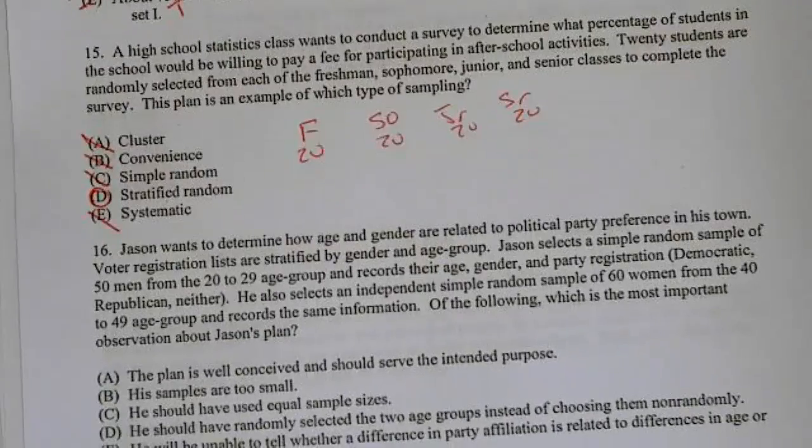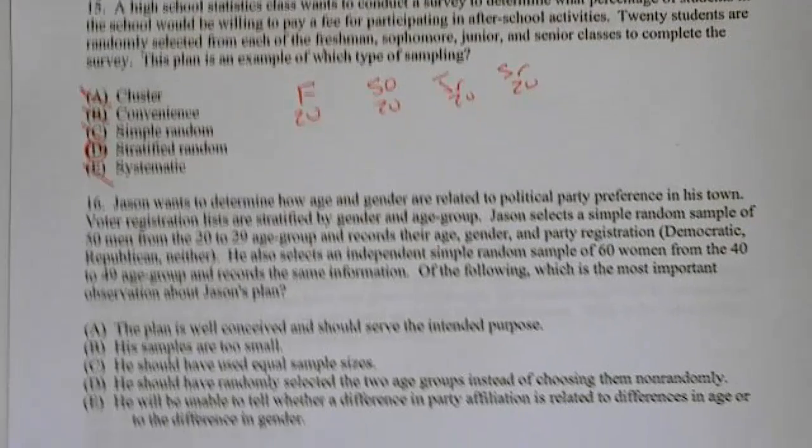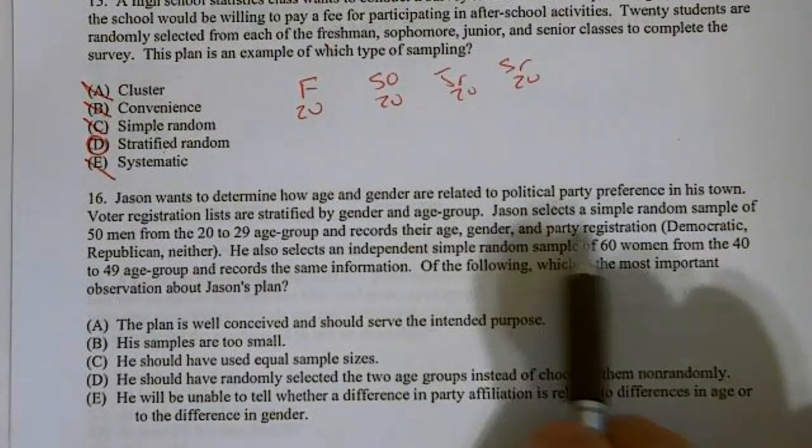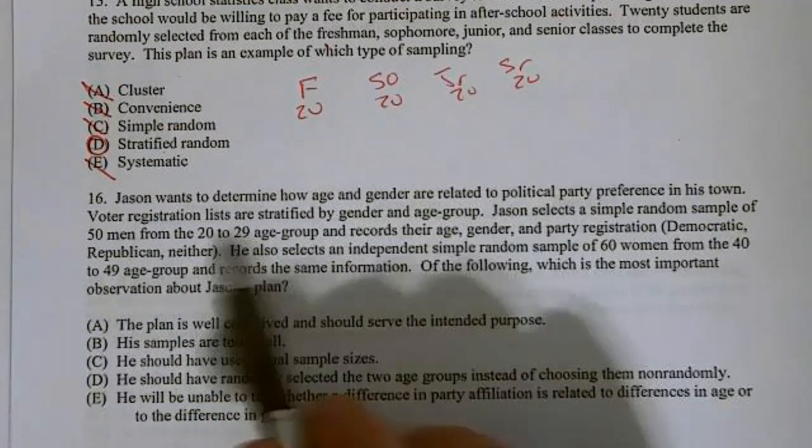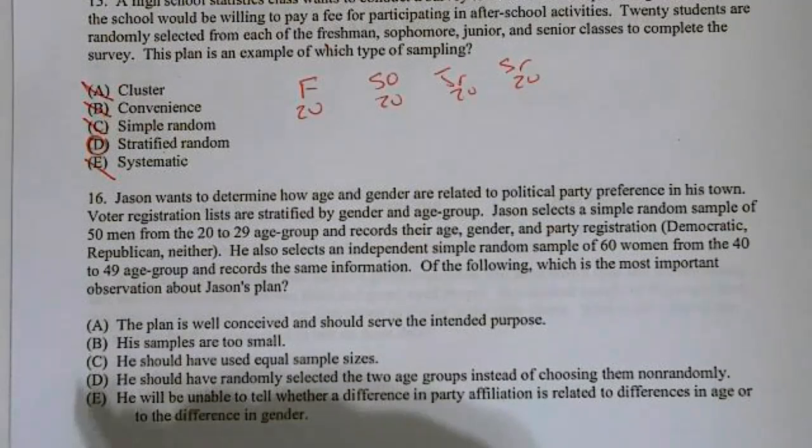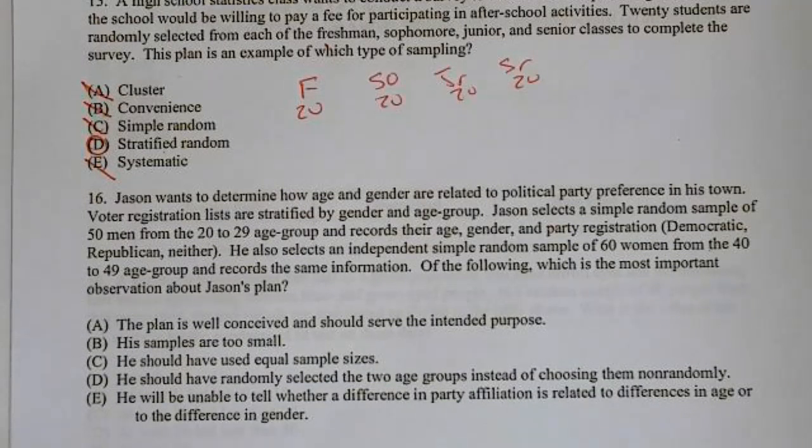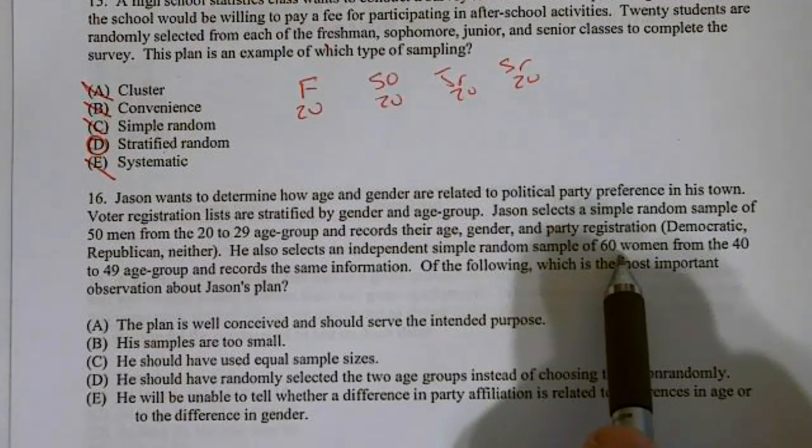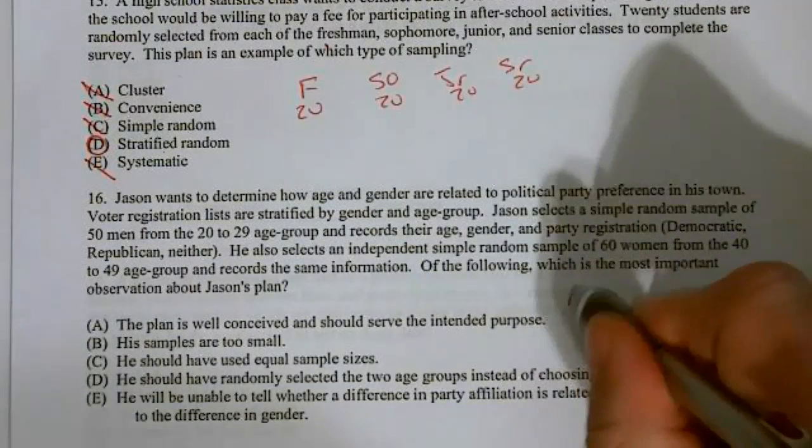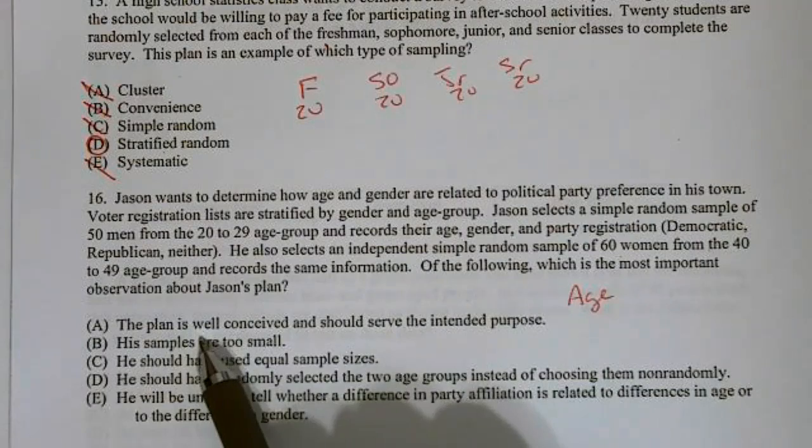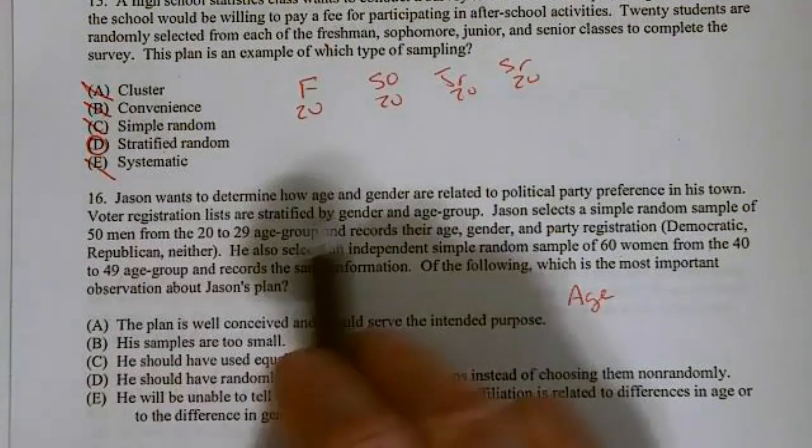Number 16. Jason wants to determine how age and gender are related to political party affiliation in his town. Voter registration lists are stratified by gender and age group. Jason selects a simple random sample of 50 men from the age 20 to 29 group and records their age, gender, and party registration. He also selects an independent sample of 60 women from the 40 to 49 age group and does the same thing. Of the following, what is the most important observation about Jason's plan? Well, what I notice is Jason doesn't represent all men age groups, nor does he represent all women age groups. So, it looks like age is going to be a confounding variable.